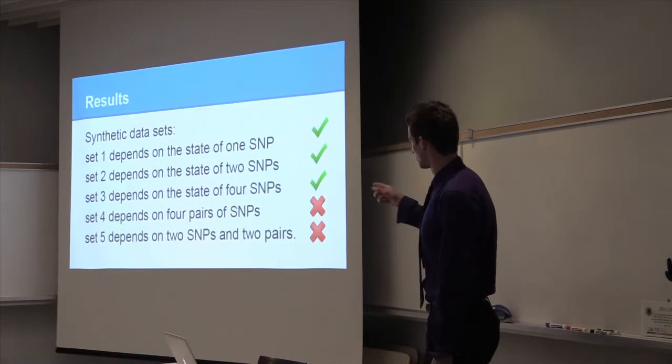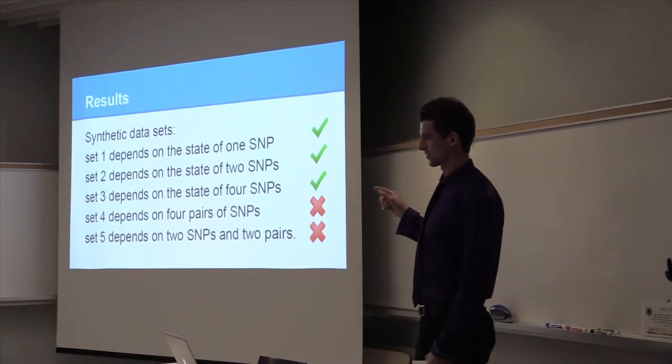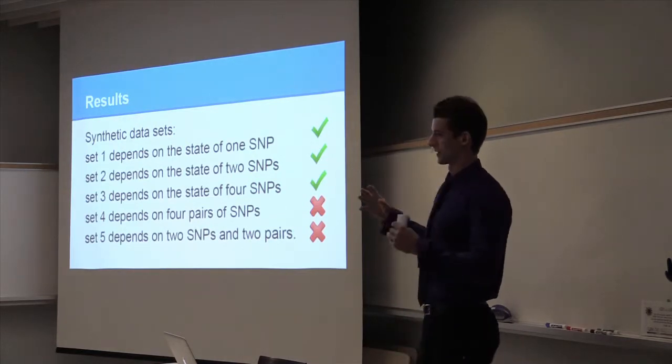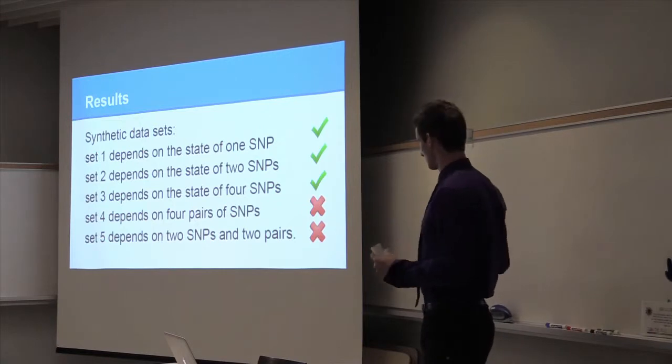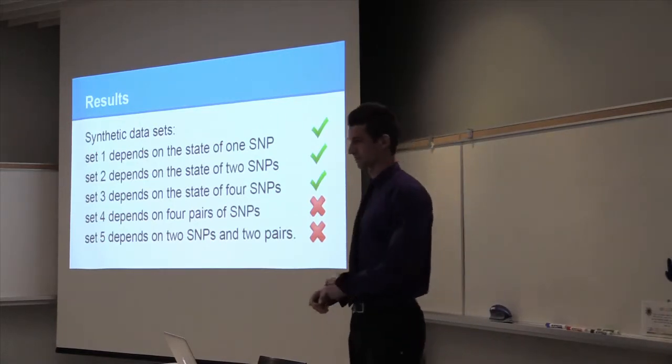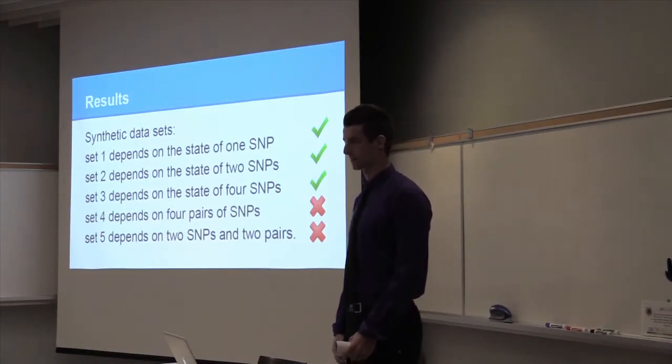Because three of those four SNPs individually don't predict the trait of interest or are poorly associated with the trait of interest, but together in that group of four, they make up a group that perfectly predicts the trait of interest, and the methods we're employing identify that.